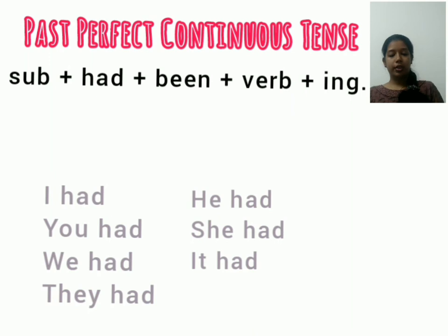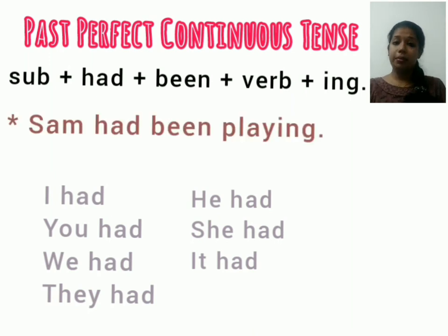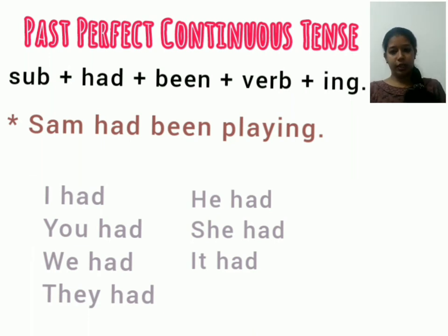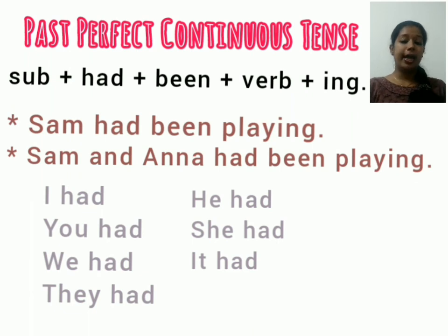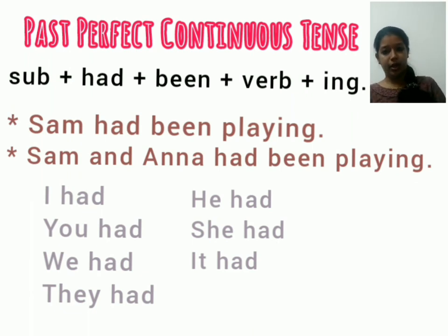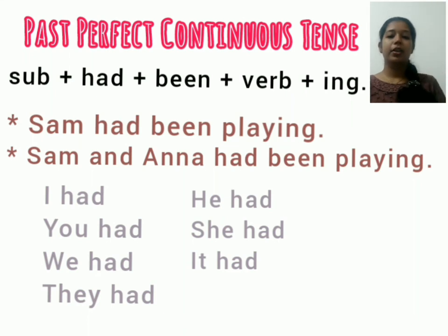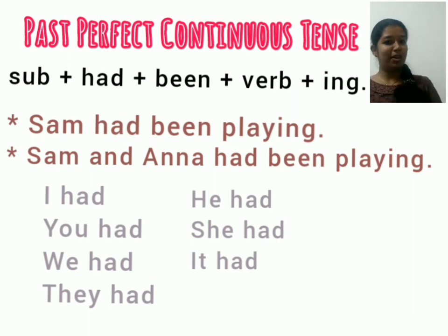The example will be: 'Sam had been playing' — singular. For plural, there is no change: 'Sam and Anna had been playing.' So that is our past tense family.